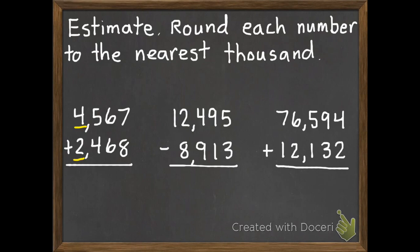Okay, the first practice problem. I don't have room to show all my work on this one, but the first number is going to change to 5,000, the second number is going to stay at 2,000. So 5,000 plus 2,000 is 7,000.